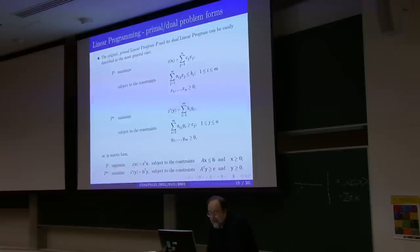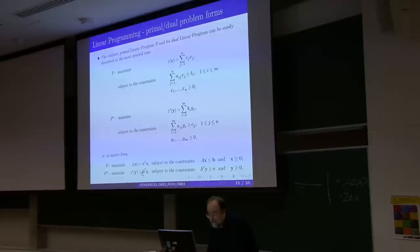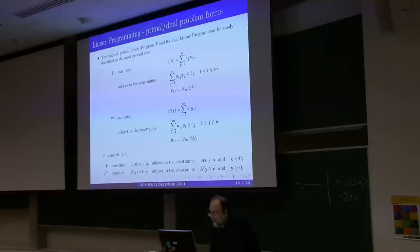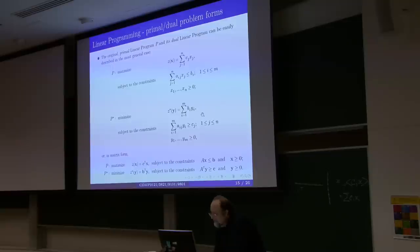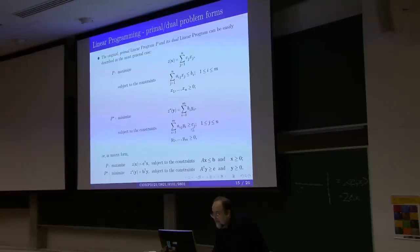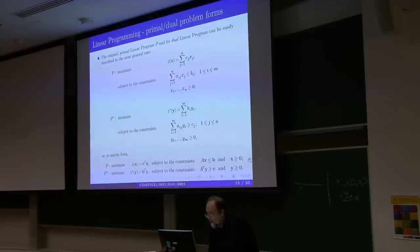So the primal problem is to maximize the objective subject to these constraints, while the dual becomes: minimize the dual objective, subject to the constraints. Here the summation was with respect to J, the second variable of the matrix, and in the dual the summation is over the first variable of the matrix. So this matrix for the dual is simply the transposed matrix of the primal problem — instead of summing with respect to J's, we sum with respect to I's. And we have the additional constraints that all variables have to be positive.